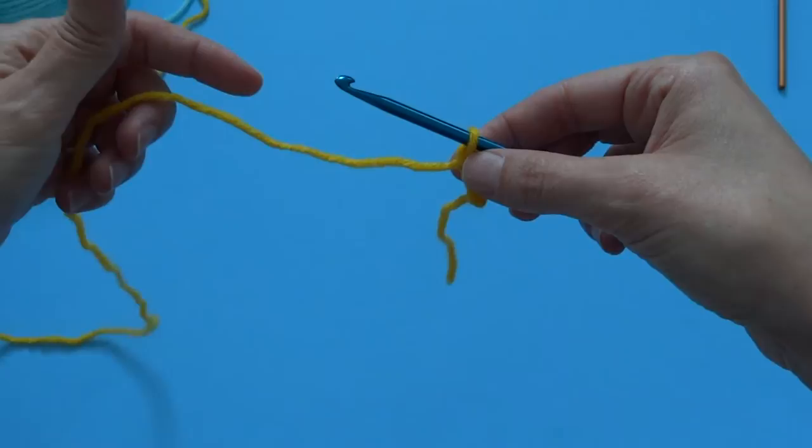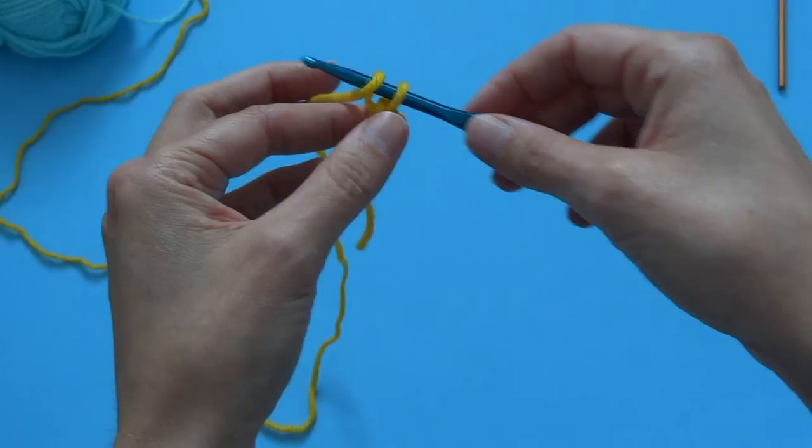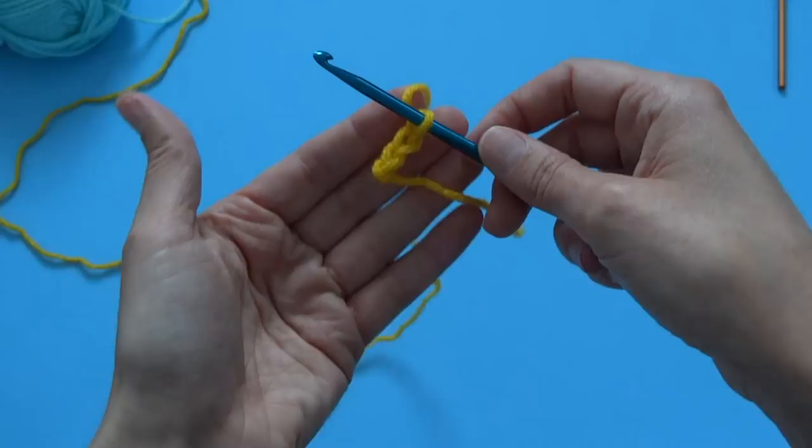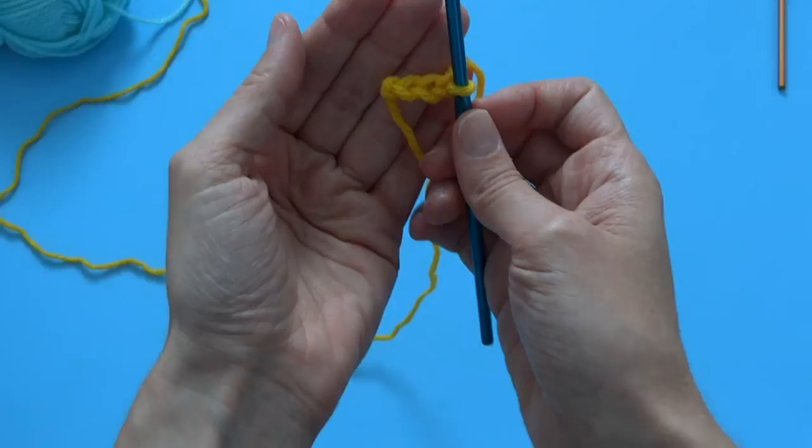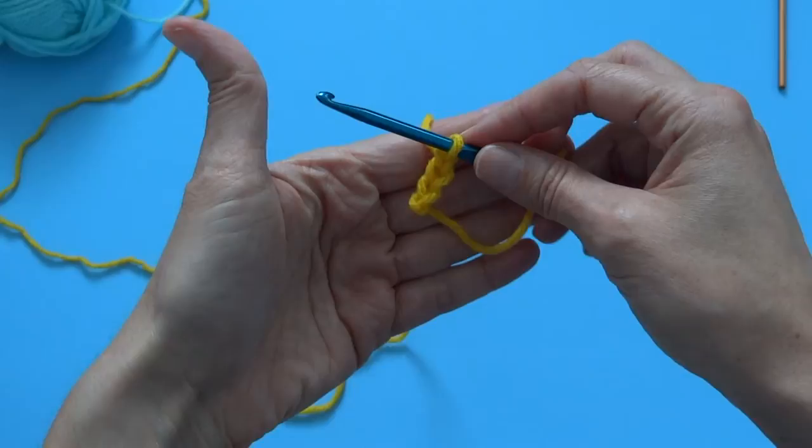We're going to chain again. Take your long string, wrap it around your hook, and you're going to use your hook to pull that string through the loop. There you go, that's three. And chains look exactly like the top of most crochet stitches.